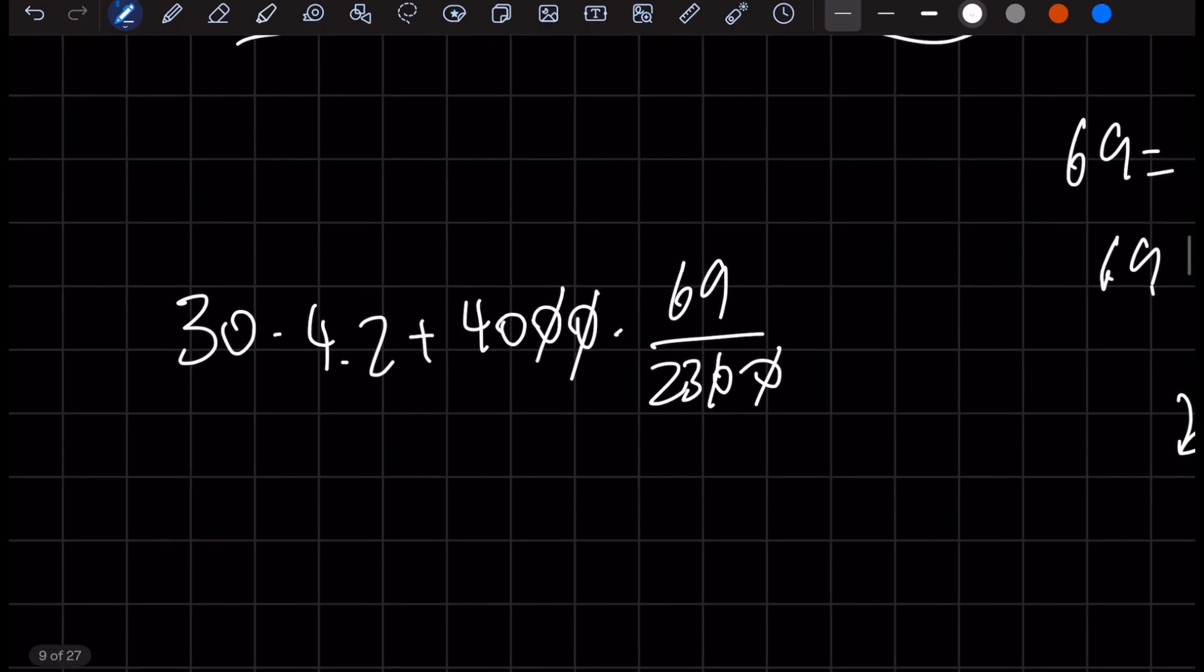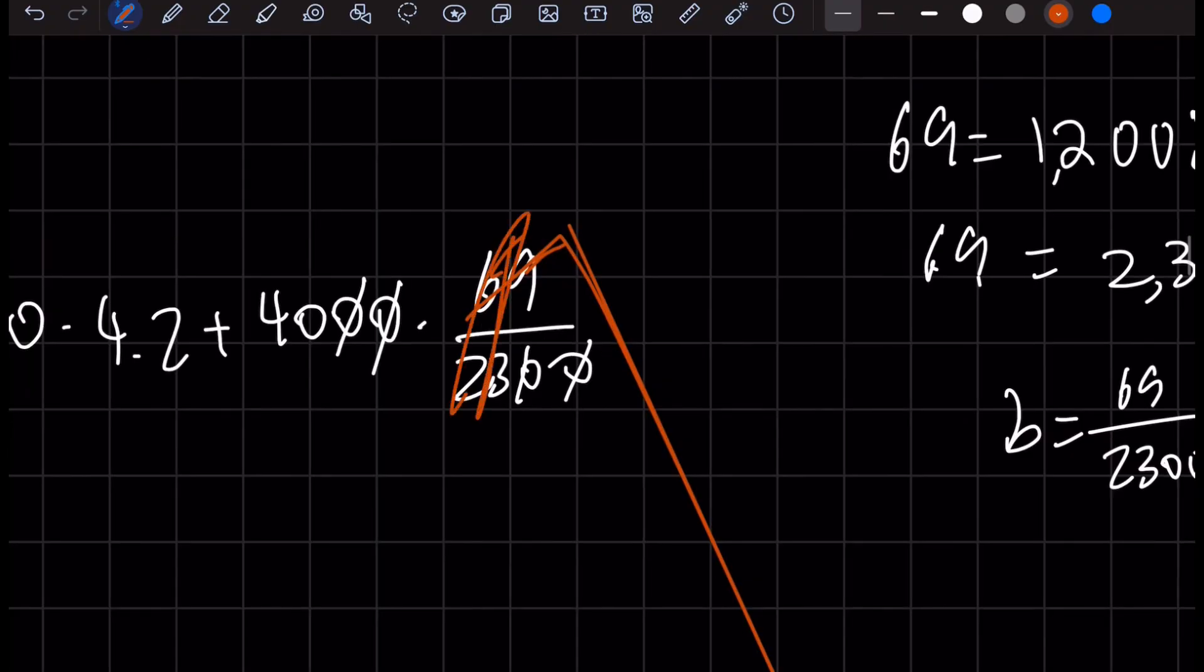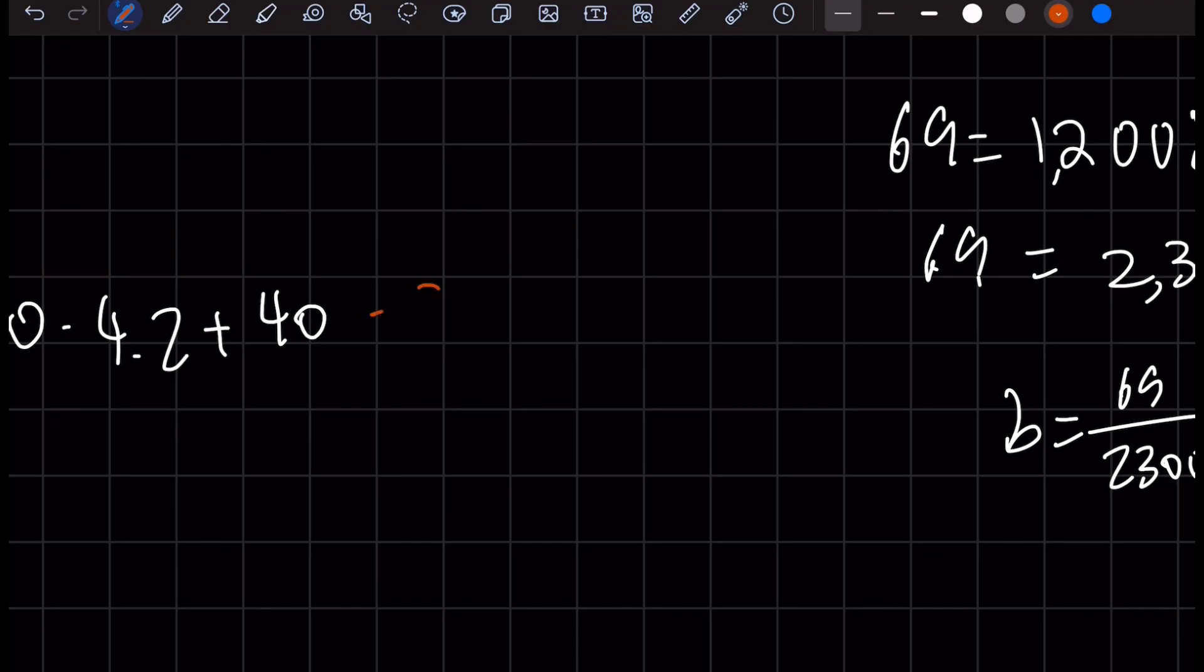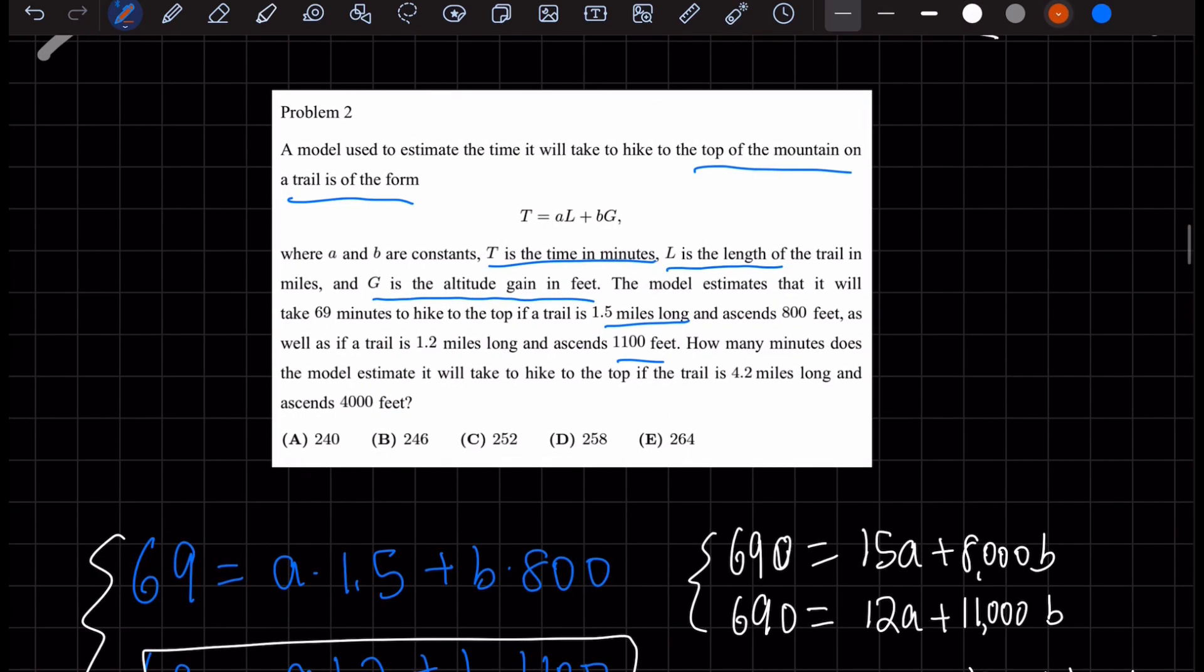And cancel out the zeros, we see that this is going to be 3. So it's going to be 40 times 3. And this would equal 126 plus 120, which is 246, which would be answer choice B right here.